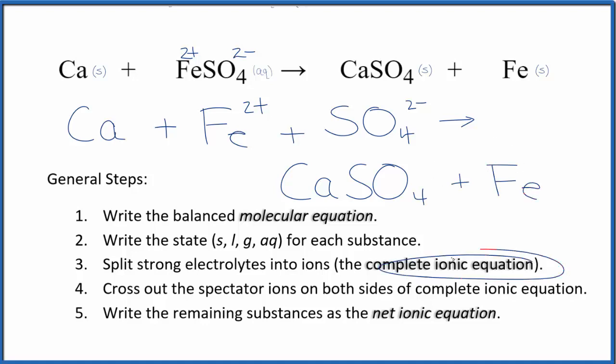So this is our complete ionic equation. Now we'd cross out the spectator ions, the things that are the same on both sides. In this case, there's nothing that's the same. The reactants and the products, everything's different. We have Fe2 plus and then Fe, but Fe2 plus, this is very different than Fe. So in this case, the complete ionic equation is the same as the net ionic equation.